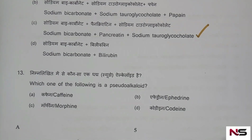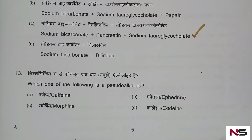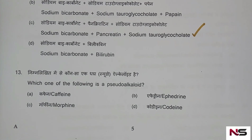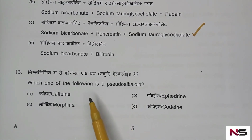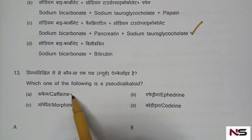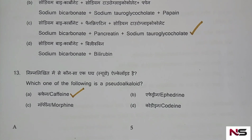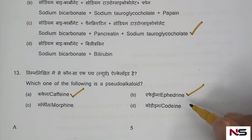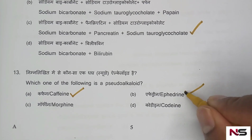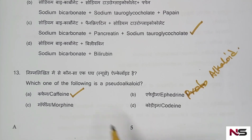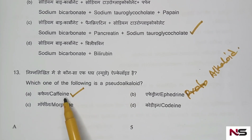Question 13 is from pharmacognosy — alkaloid chapter. Which one of the following is a pseudoalkaloid? Options: A) caffeine, B) ephedrine, C) morphine, D) codeine. The correct answer is option A, caffeine. Many students confuse this — ephedrine is a protoalkaloid, not a pseudoalkaloid. The correct answer for pseudoalkaloid is caffeine.